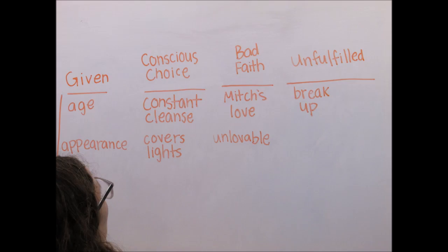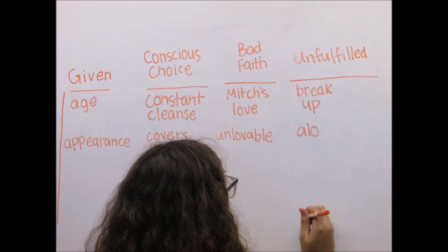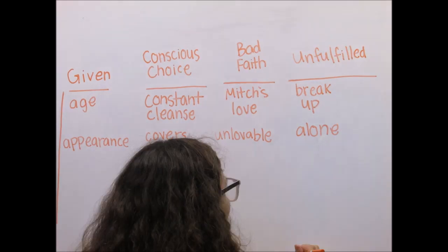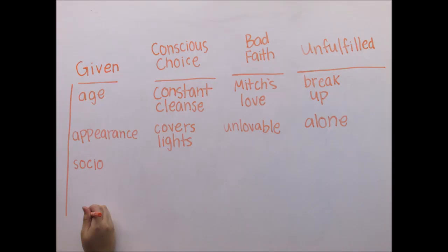Ultimately, this brings Blanche unfulfillment, since her inauthentic life of denying the facticity of her appearance contributes to the lies she tells Stella and Stanley. These lies eventually leave her alone in a mental institution at the end of the play.